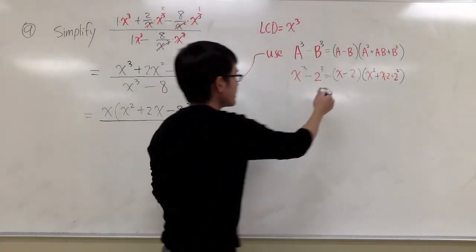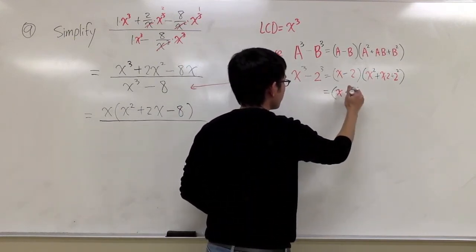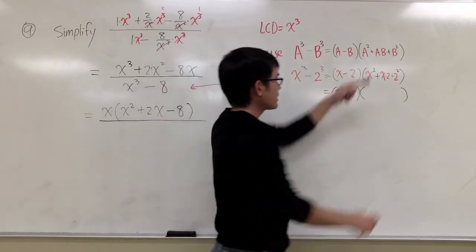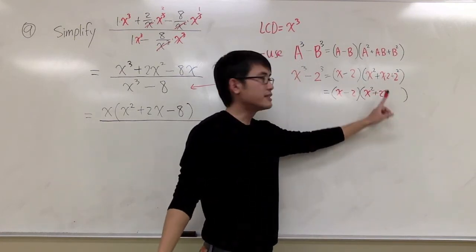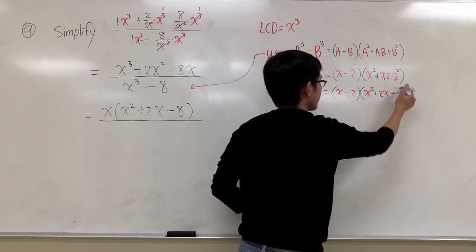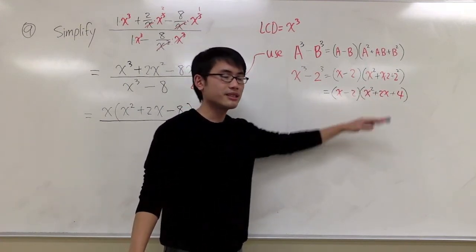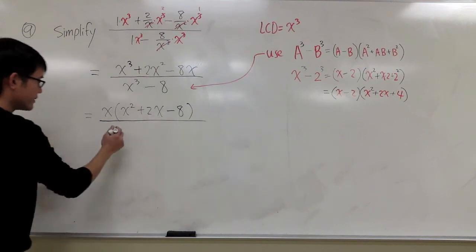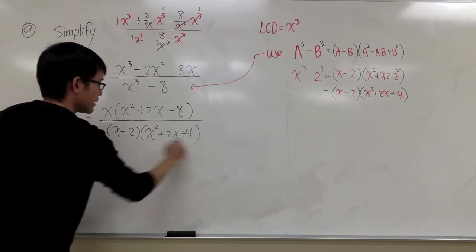So the first parentheses is just (x minus 2). For the second parentheses, we have x squared — still stays the same — plus 2x (instead of x times 2), and plus 4 (instead of 2 squared). This is what we get for the denominator. We replace x to the third power minus 8 with (x minus 2)(x squared plus 2x plus 4).